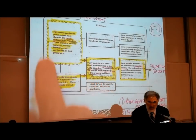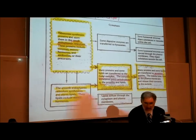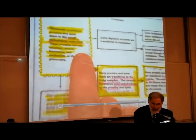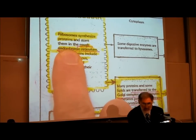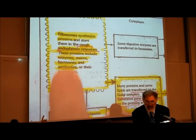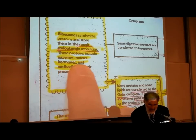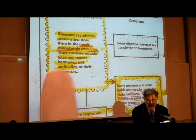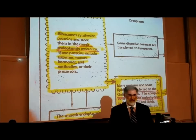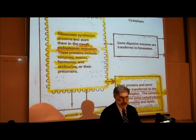The top left box says: ribosomes synthesize proteins in the rough endoplasmic reticulum. These proteins include enzymes, mucus, hormones, protein hormones, and antibodies. That's exactly what we've learned about the ribosomes of the granular ER.